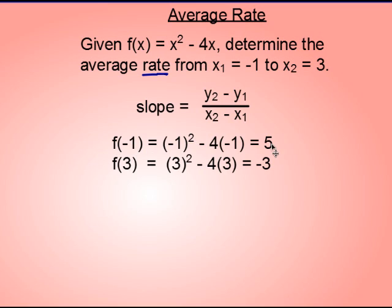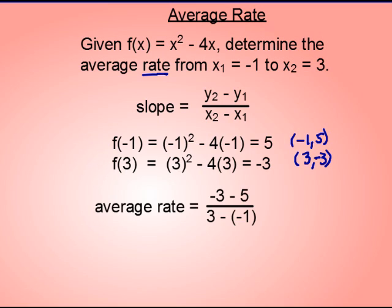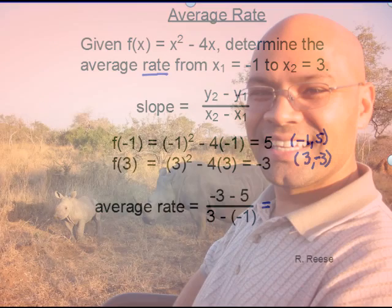F of negative 1 ends up being 5. And f of 3 ends up being negative 3. Which essentially means this. Negative 1 comma 5 is a point. And also, 3 comma negative 3 is a point. So, we have our two coordinates. Now you're ready to calculate slope. Only it's average rate. So, there you are. And then from here, do your calculation, simplifying, et cetera, et cetera. Okay. That's it for this video. And I'll catch you next time.